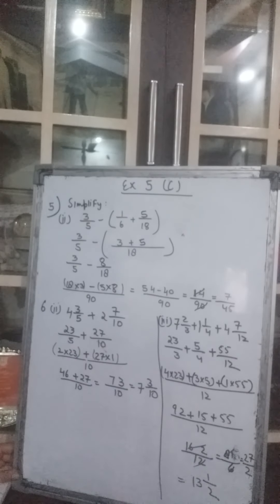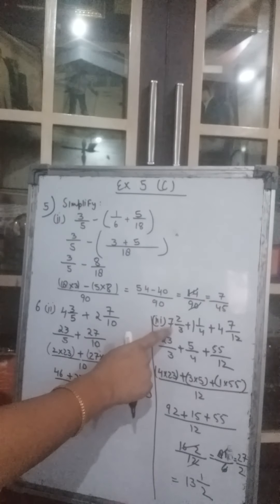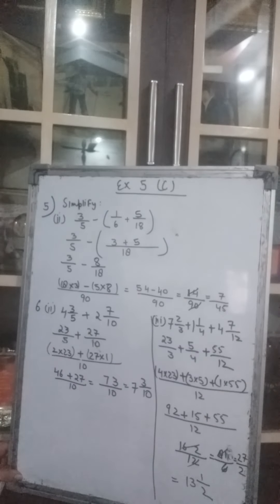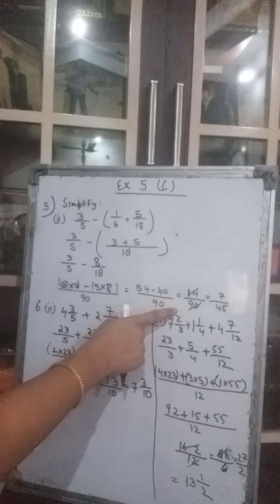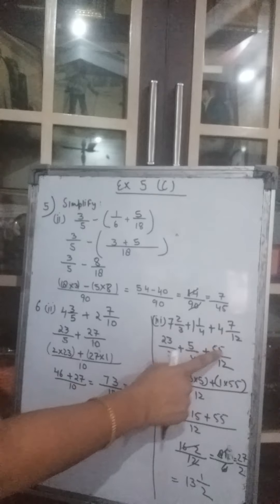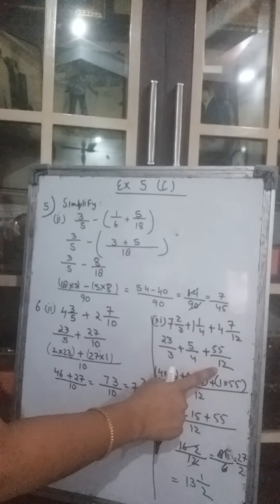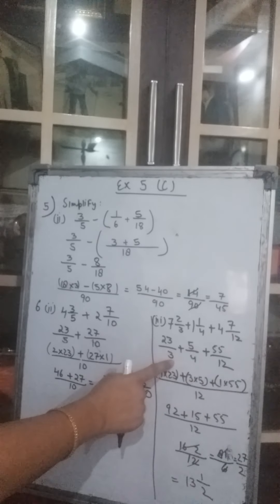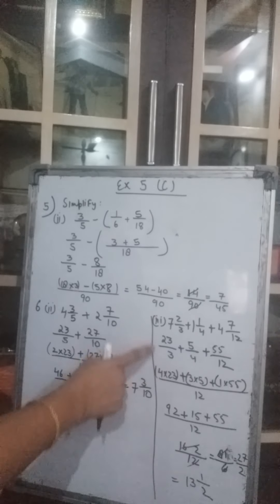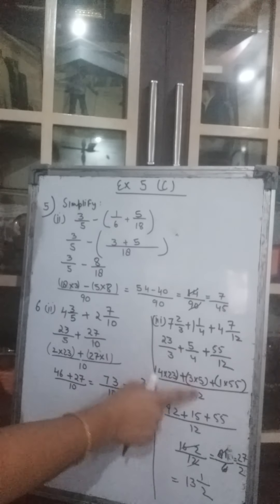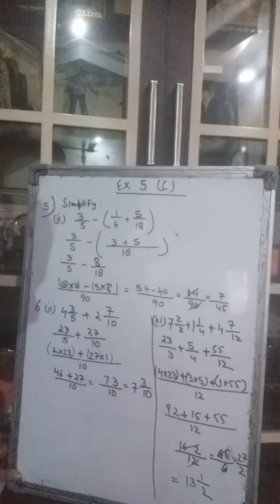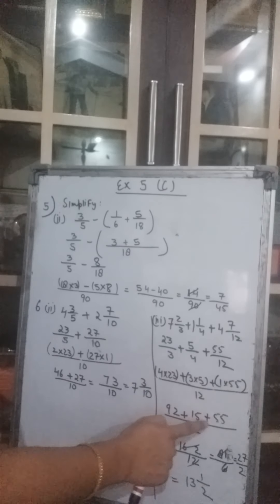Let's come to the third part. It says 7 whole 2 upon 3 plus 1 whole 1 upon 4 plus 4 whole 7 upon 12. First convert them into improper fractions: 3 7s are 21 plus 2 gives 23 upon 3, plus 4 1s are 4 plus 1 gives 5 upon 4, plus the LCM is 12 so 12 divided by 3 gives 4, 4 multiplied by 23; plus 12 divided by 4 gives 3, 3 into 5; plus 55 comes as it is. The answer: 92 plus 15 plus 55 upon 12.